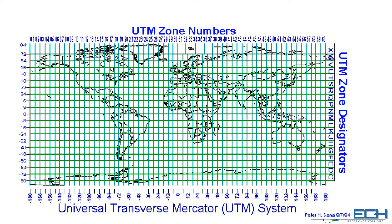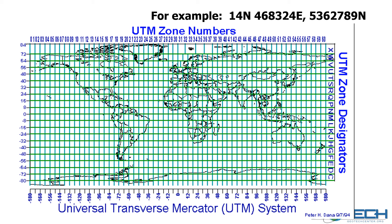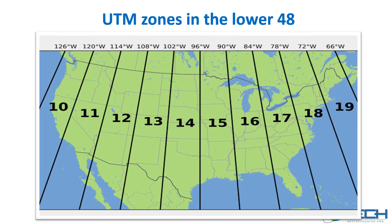This shows how the UTM grid wraps cylindrically around the Earth, starting at 180 degrees, progressing from 0 around to 180 degrees. Looking at the US, you can see the zone numbers 10 through 19 progressing from west to east every 6 degrees.